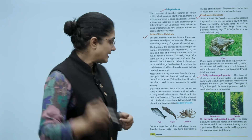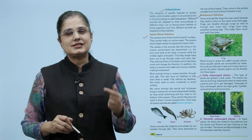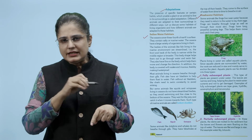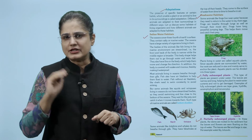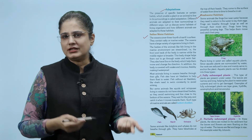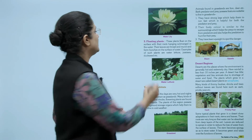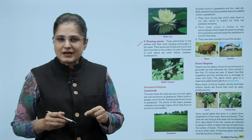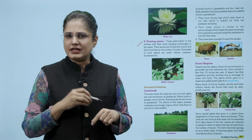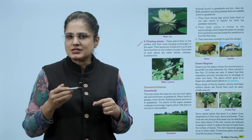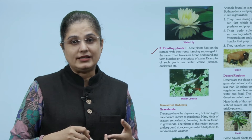The second type are partially submerged plants - in these plants the stems are rooted in the sediment but the leaves and flowers float on the top of water. The leaves are flat and large in size. Examples are water lily and lotus. The third type are floating plants - these plants float on the surface with their roots hanging submerged in the water. Their leaves are broad and round and form bunches on the surface of water. Examples are water lettuce and duckweed.